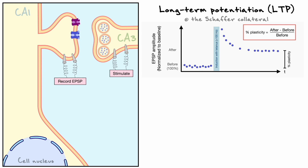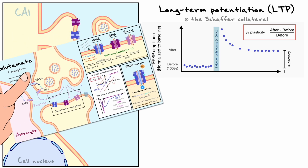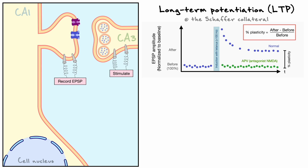Now that we understand how to interpret the basic plasticity recording plots, let's see how we can understand the mechanisms underlying LTP at the Schaffer collateral. It turns out that LTP at the Schaffer collateral is highly dependent on NMDA receptors — ionotropic channels of glutamate covered in our discussion on neurotransmitters. One important aspect is that the compound AP5 acts as an antagonist to the NMDA receptors. Hence, when we perform tetanization experiments with AP5 blocking the NMDA receptors, there is no increase in postsynaptic response, entailing that NMDA receptors play an important role in mediating LTP.